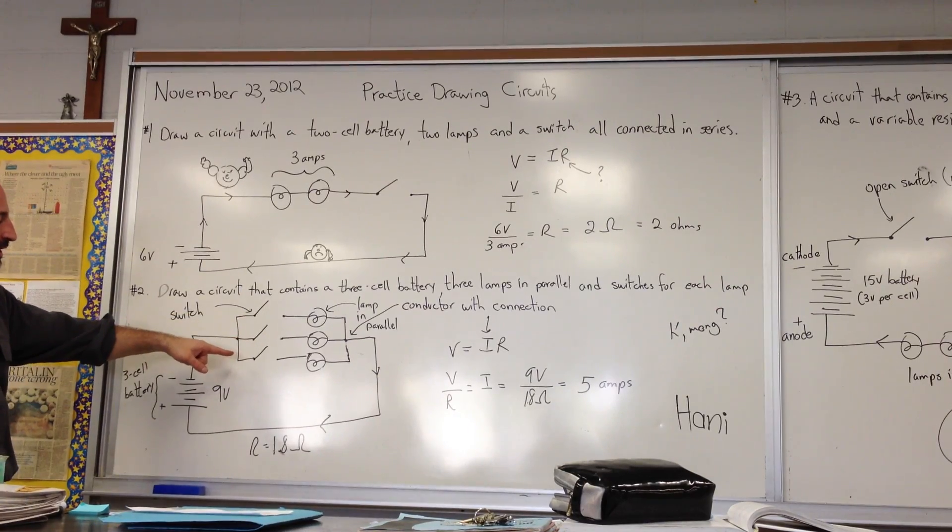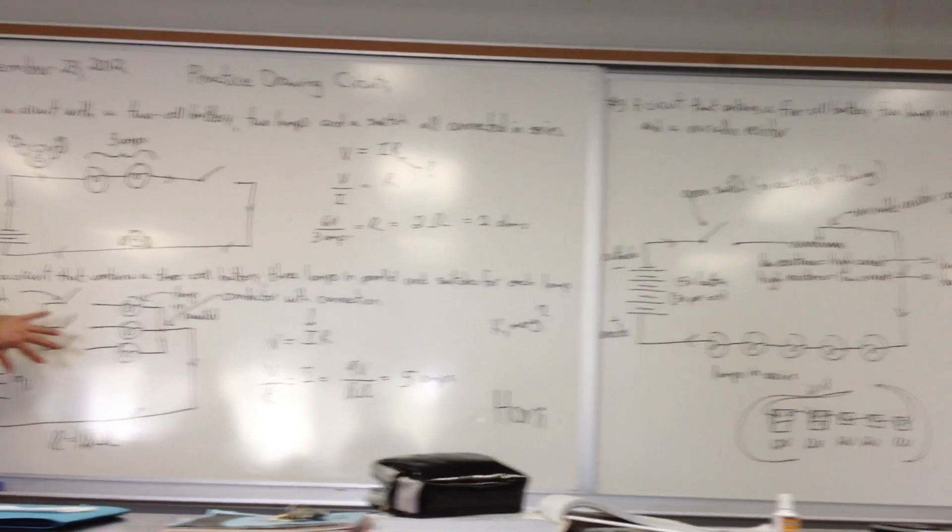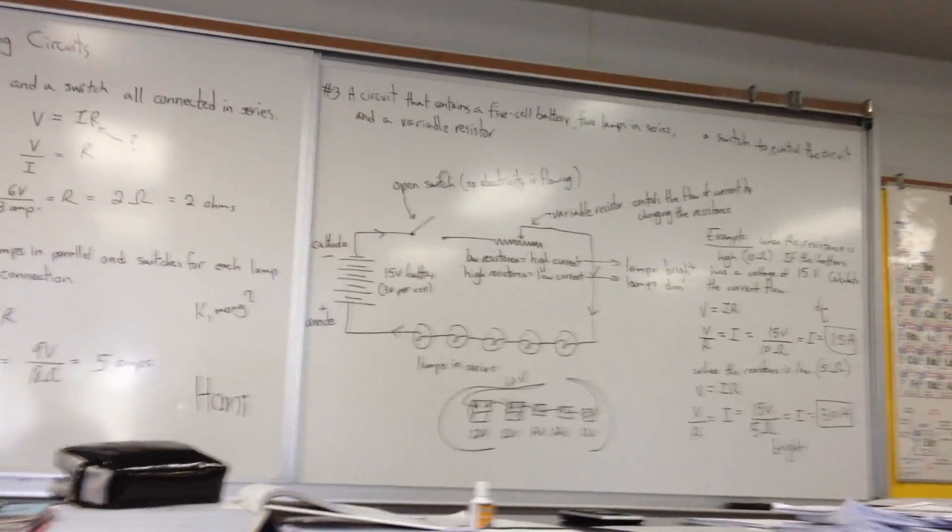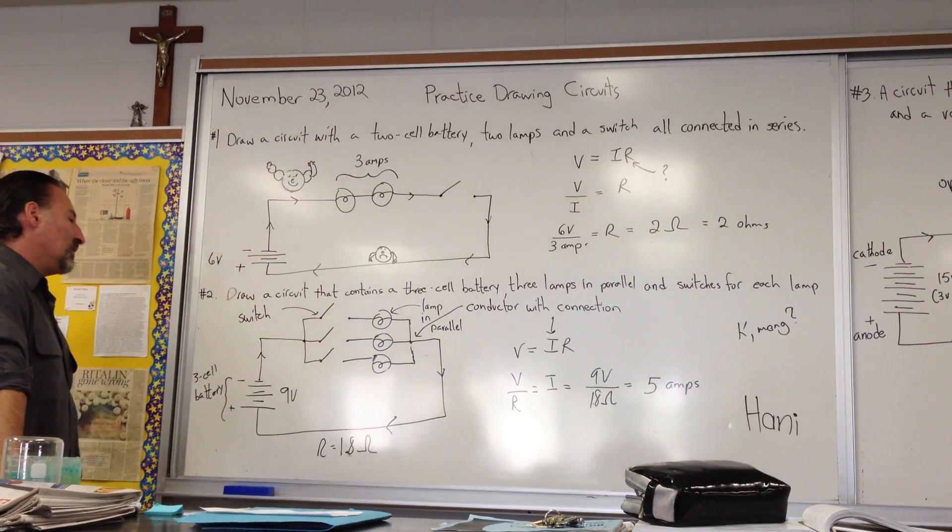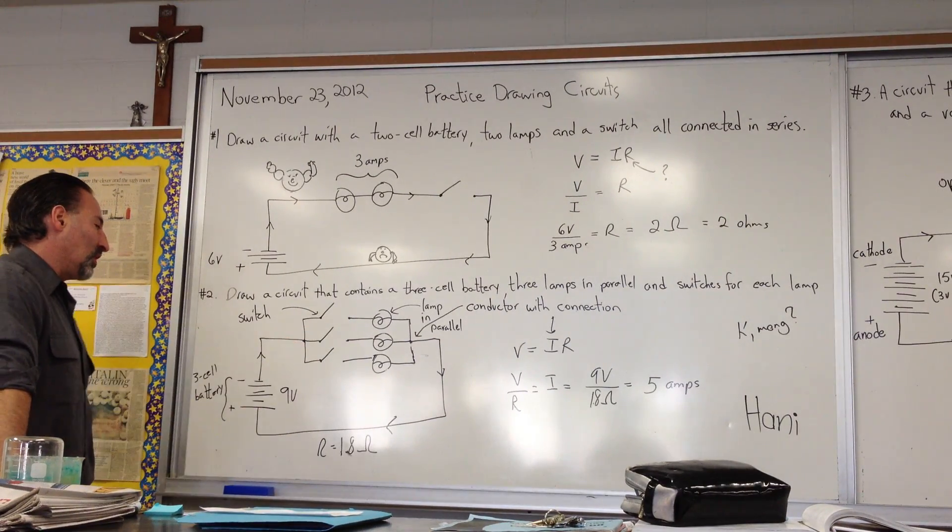So each lamp has its own switch, meaning they can be operated independently. Close all three switches, all three lamps will turn on. Close one switch, only one lamp, only the switch in front of that, only the lamp after that switch will turn on. So again, the electrons flow out of the negative side, they go through the switch when it's closed, and it lights the lamps in parallel.